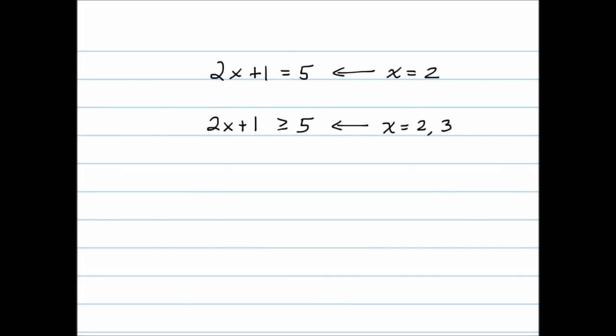2 times 3 plus 1 is equal to 7, which is certainly greater than 5. Or 3.1, 4, 5, and so on. Hopefully you can see that there are many, many solutions that actually work. In fact, there are infinitely many solutions to this inequality. So it is more convenient to use set notation or interval notation to describe the solutions.